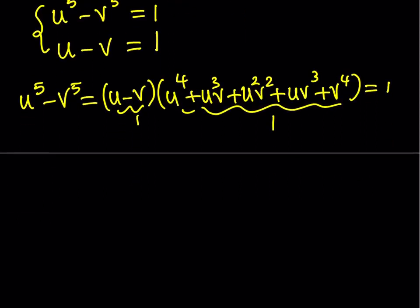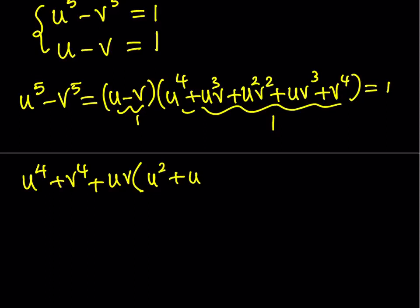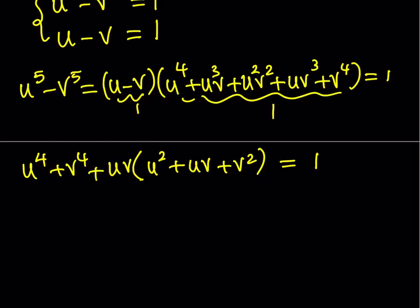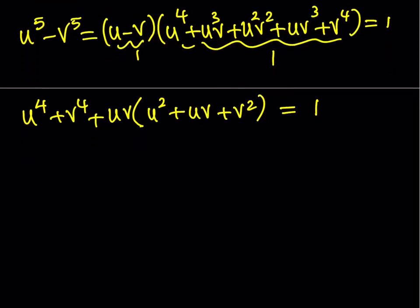That gives us a nice equation. Let's write it arranged: u to the fourth plus v to the fourth, plus — for the trinomial in the middle, I can factor out uv — so that gives uv times u squared plus uv plus v squared, which is equal to 1. I can write u to the fourth plus v to the fourth as u squared plus v squared, all squared, minus 2u squared v squared.